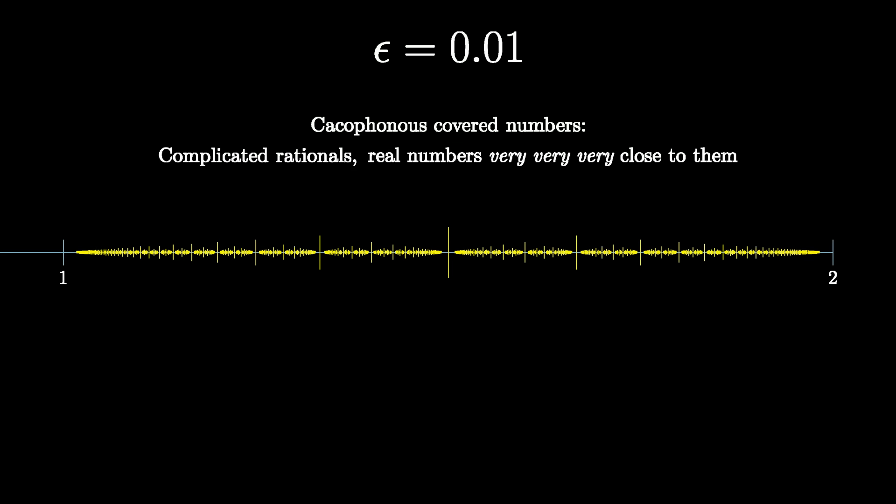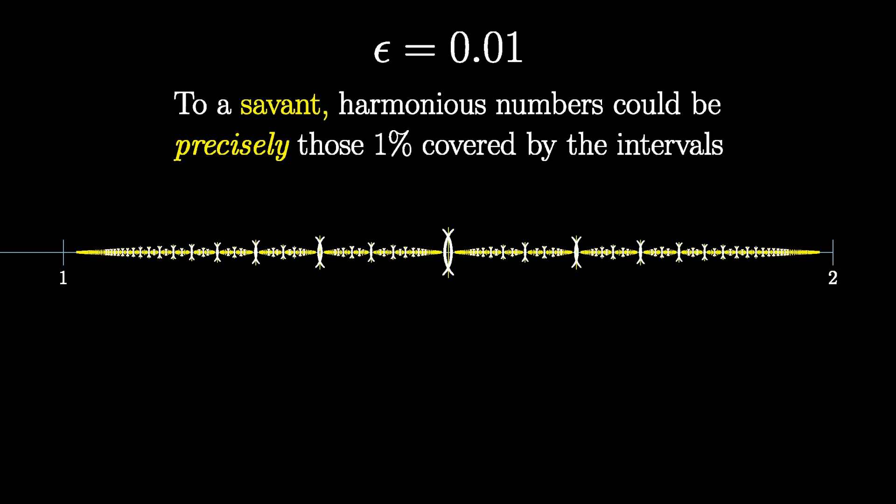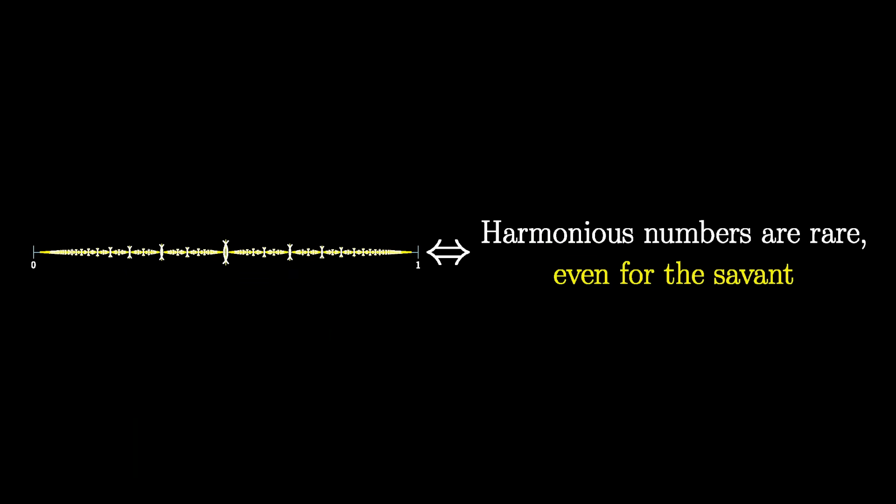However, think of the savant who finds harmonic patterns in all rational numbers. You could imagine that for her, harmonious numbers are precisely those 1% covered by the intervals, provided that her tolerance for error goes down exponentially for more complicated rationals. In other words, the seemingly paradoxical fact that you can have a collection of intervals densely populate a range while only covering 1% of its values corresponds to the fact that harmonious numbers are rare, even for the savant. I'm not saying this makes the result more intuitive. In fact, I find it quite surprising that the savant I defined could find 99% of all ratios cacophonous. But the fact that these two ideas are connected was simply too beautiful not to share.